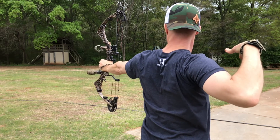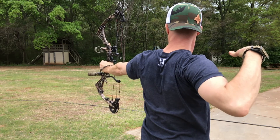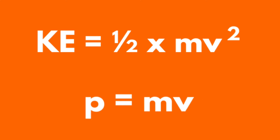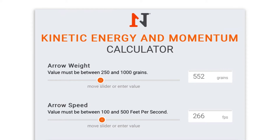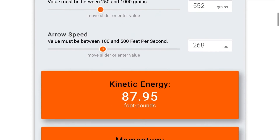Let's talk hunting arrows. If you're well read in physics, you might know that these are the formulas for kinetic energy and momentum. Now, for the other 99.9% of us, there's the N1 Outdoors kinetic energy and momentum calculator. Simply input your total arrow weight in grains and your arrow speed in feet per second and the calculator will do the rest.